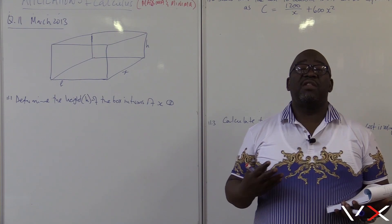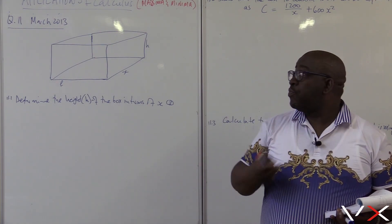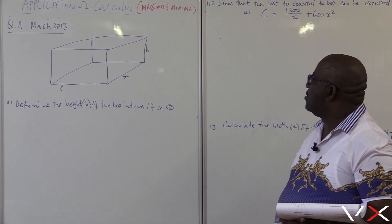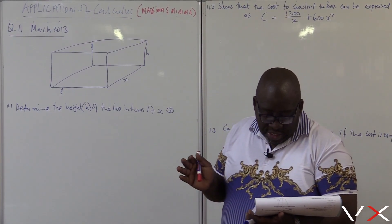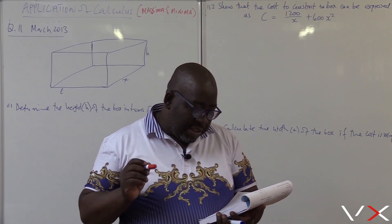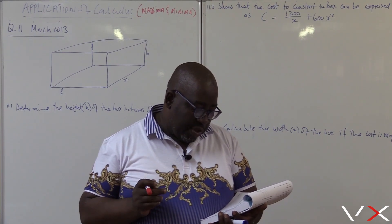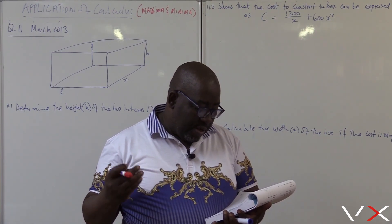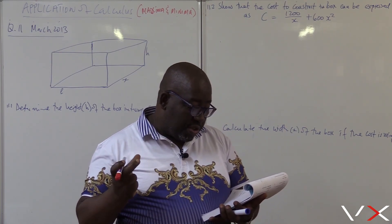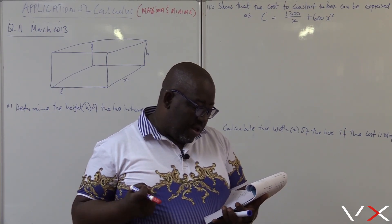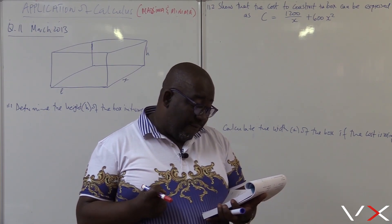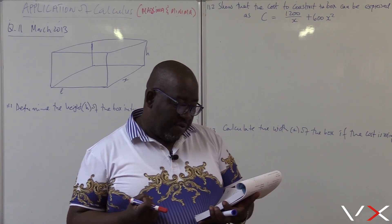Think of the volume. Volume is nothing else but the area of the base times height. We're given this rectangular box. Determine the height of the box in terms of x. A rectangular box is constructed in such a way that the length of the base is three times as long as its width. The material used to construct the top and the bottom of the box costs 100 rand per square meter. The material used to construct the sides of the box costs 50 rand per square meter. The box must hold a volume. We're given a volume here. And let the width of the box be equal to x.